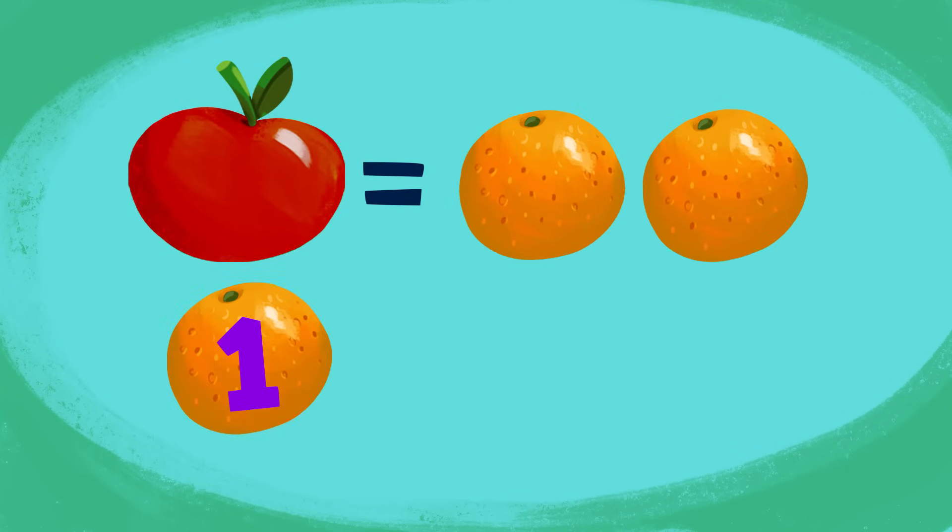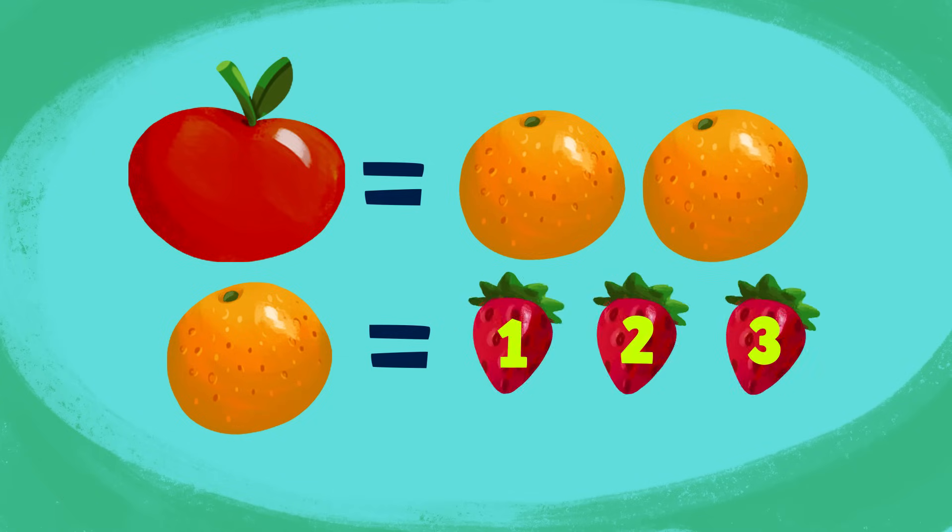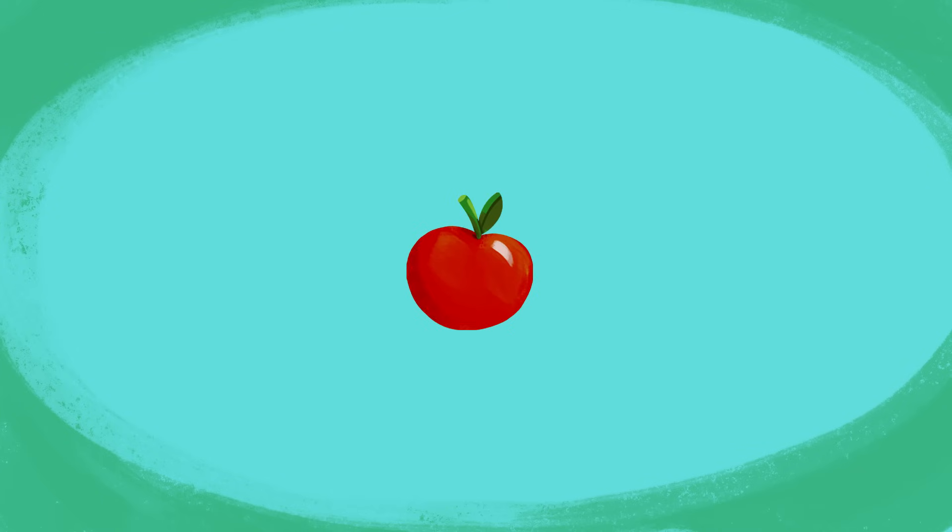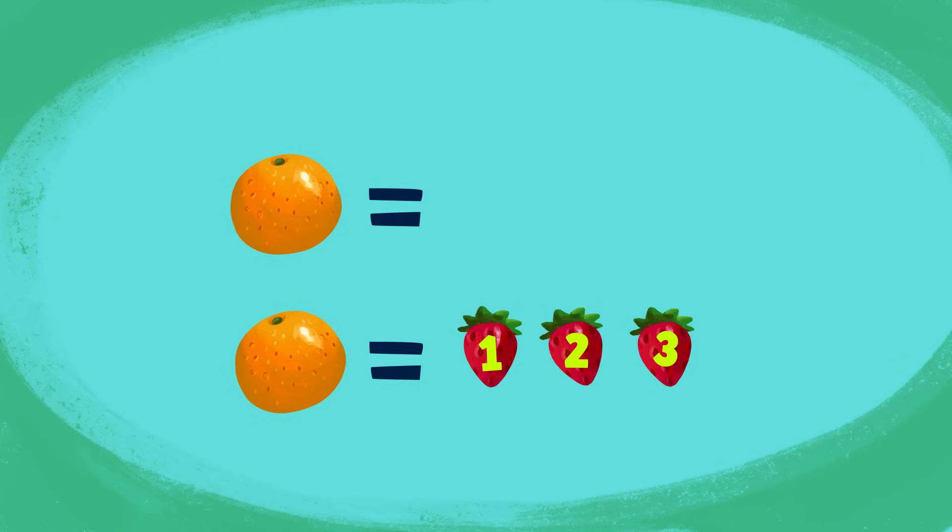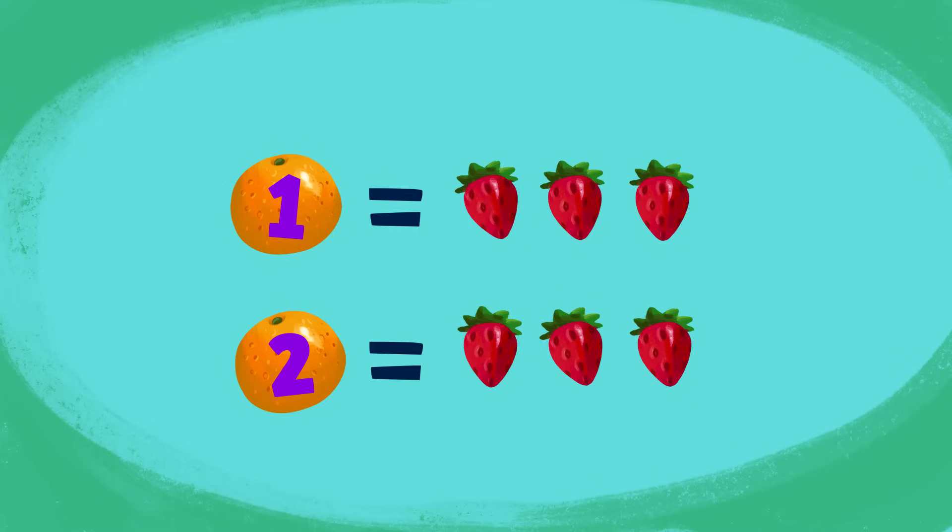So, one orange equals three strawberries! And Bip can get two oranges for his one apple! Each orange is worth three strawberries! So, if Bip swaps his one apple for two oranges, and each orange can be swapped for three strawberries, then how many strawberries can Bip get for two oranges?